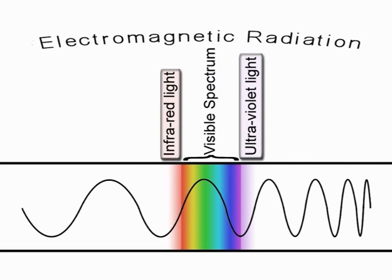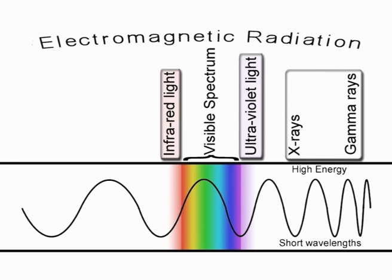At the upper end of the electromagnetic spectrum are X-rays and gamma rays, which have very short wavelengths and are very high in frequency and energy.